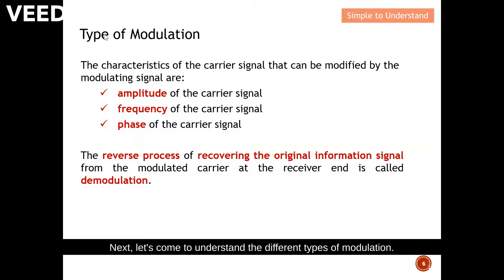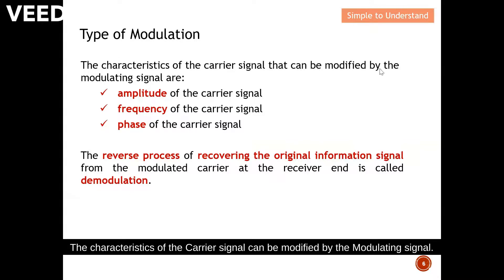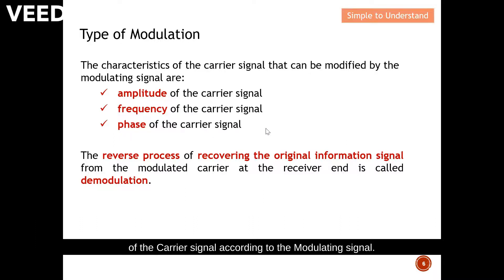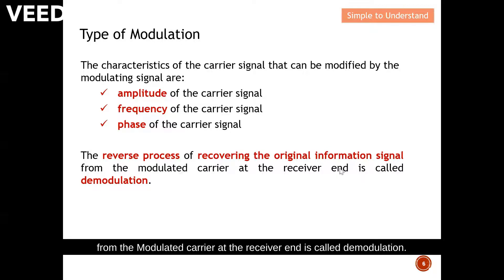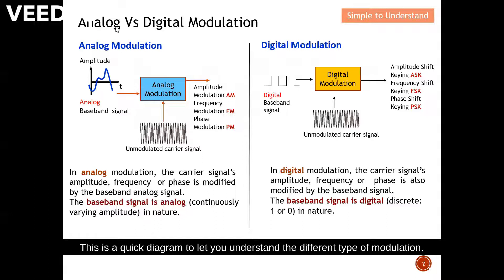Next, let's understand the different types of modulation. The characteristics of the carrier signal can be modified by the modulating signal — you can either modify the amplitude, the frequency, or the phase of the carrier signal according to the modulating signal. The reverse process of recovering the original information signal from the modulated carrier at the receiver end is called demodulation. Here is a quick diagram to illustrate the different types of modulation.